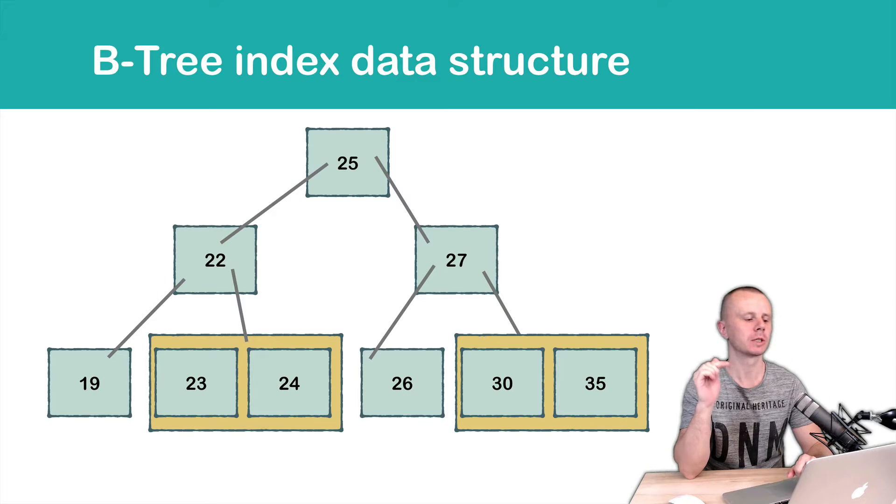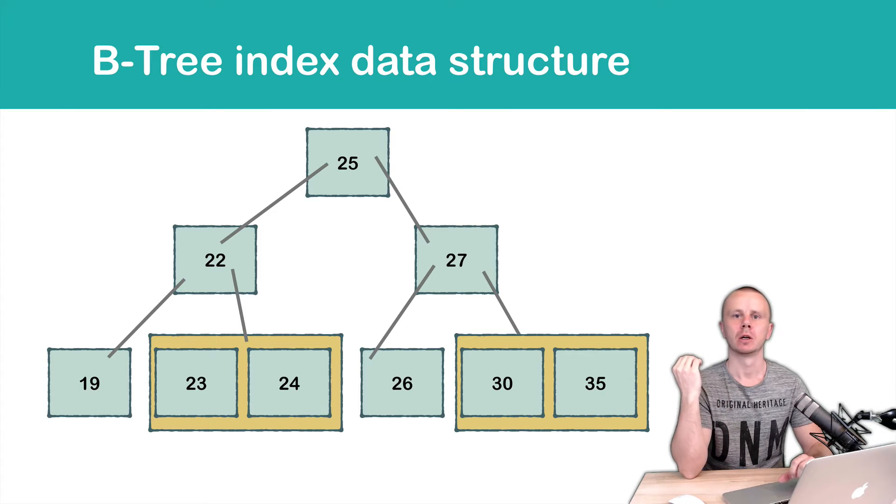MongoDB uses B-tree index data structure, so values of the fields are stored in the tree like this. This structure allows very quick search and inserts of new values. We will not cover B-tree in detail, so just a short overview.